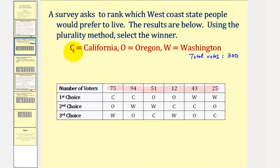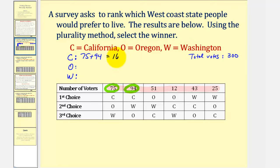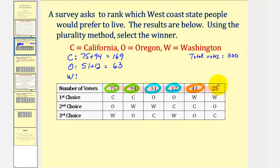To determine the plurality winner, we'll determine how many first choice votes each state received. California received 75 plus 94 first choice votes, which equals 169. Oregon received 51 plus 12 first choice votes, which is 63 first choice votes. And Washington received 43 plus 25, or 68 first choice votes.